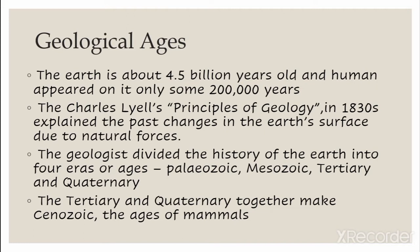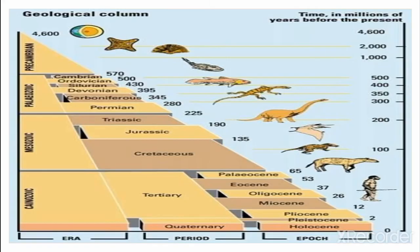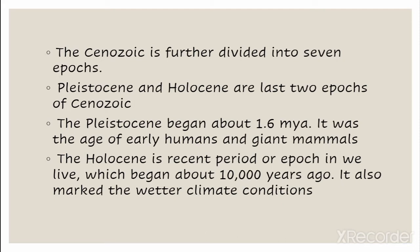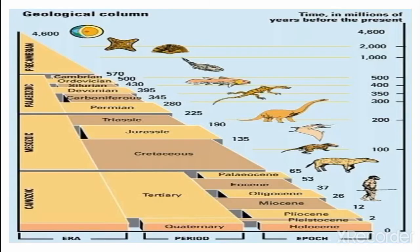Tertiary and Quaternary together form what we call the Age of the Mammals. You can understand by this picture. So there are four ages: first is Paleozoic, then Mesozoic, and then Tertiary and Quaternary combine to form the Cenozoic age. Cenozoic is further divided into seven epochs.